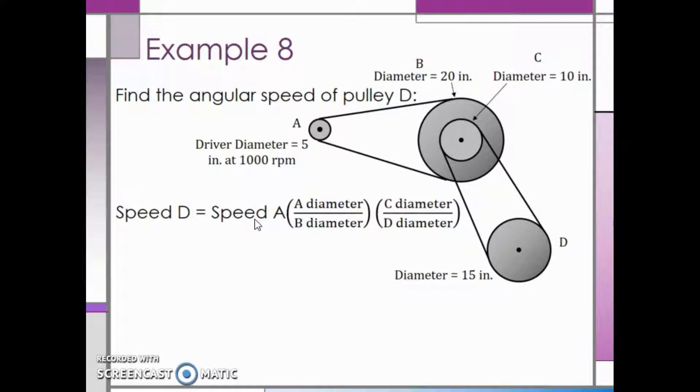So we have to multiply the speed of pulley A by the ratio of the diameter of A to the diameter of B since they are connected by the same belt. And then we multiply by the diameter of pulley C divided by pulley D since they are also connected by a different belt.